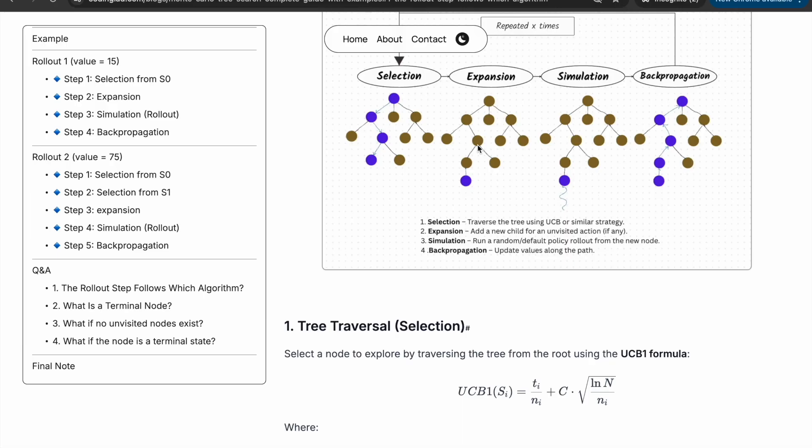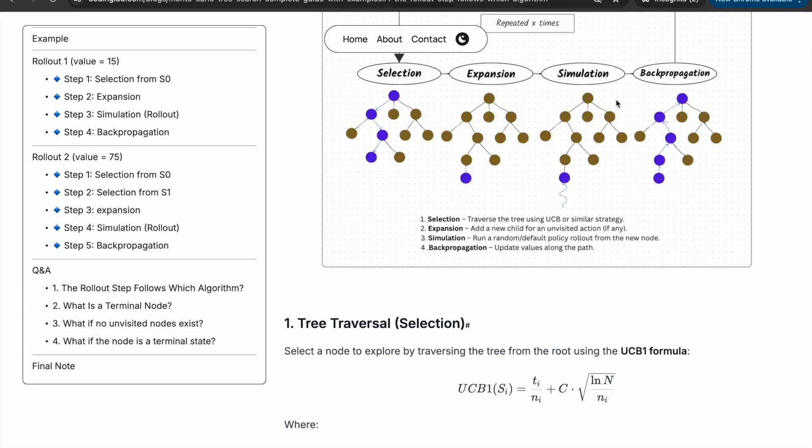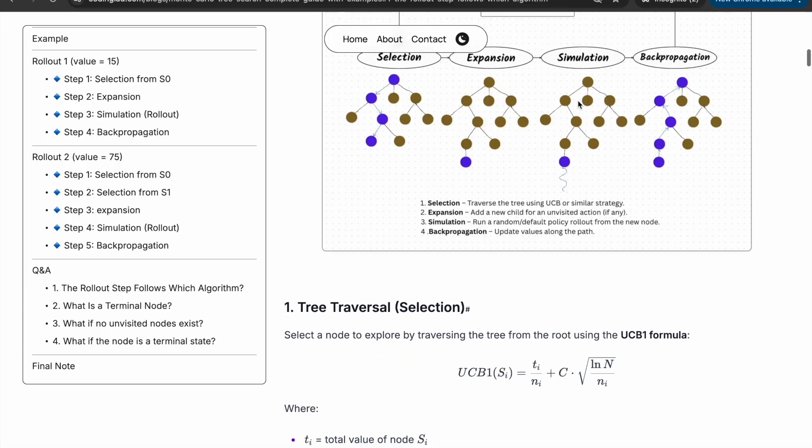After the expansion step comes simulation, also called a rollout. From the newly expanded node, we simulate the game forward using a random or default policy until we reach a terminal state. Unlike the selection step where we use the UCB1 formula to choose nodes, in the rollout step we simply follow random or heuristic-based moves until we reach a terminal node.